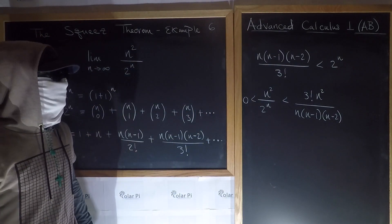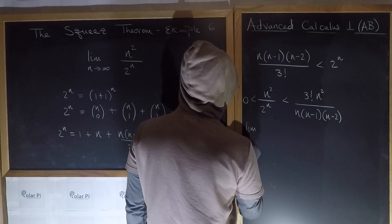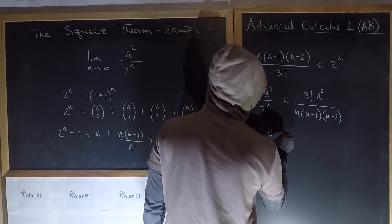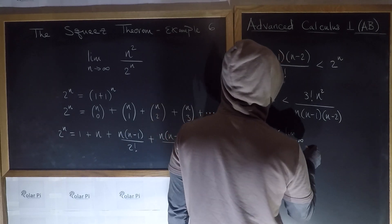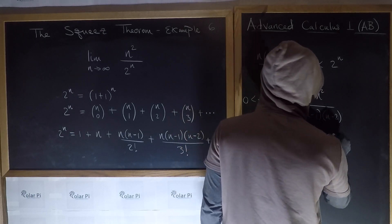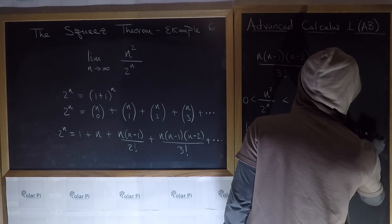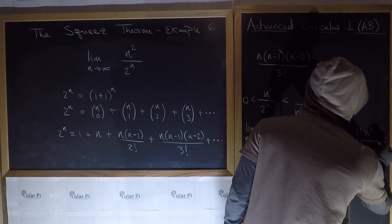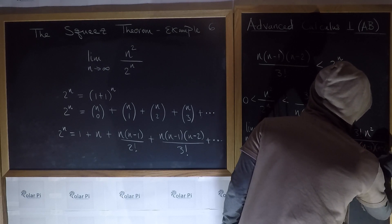and guess where I'm going to go with this? I'm going to say limit as n goes to infinity on all three parts here. So when I do, first I write lim as n goes to infinity of 0 is less than lim as n goes to infinity of n squared over 2 to the n, which in turn is less than